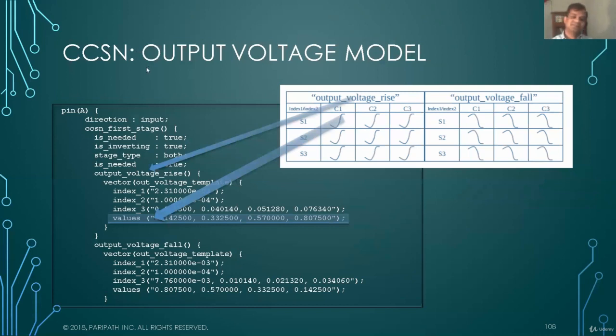And this is how it looks in the CCS, in the Liberty models. Output voltage rise, output voltage fall. And again, it's a voltage waveform that's being captured. And this is how it looks. The keywords are output voltage rise. It starts with vector, index one is slope, index two is load, index three is time, index four is your voltage value. And that's repeated for fall.